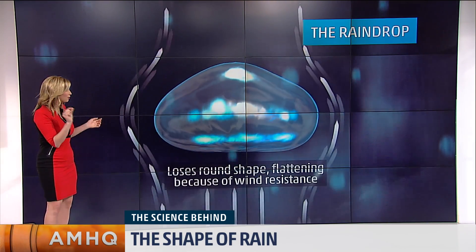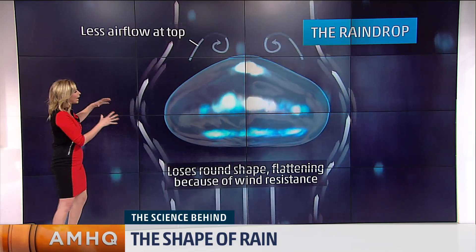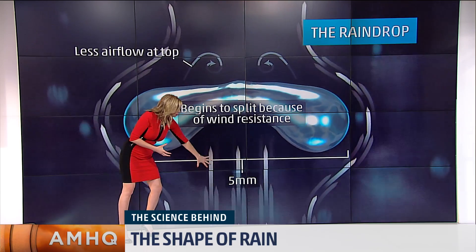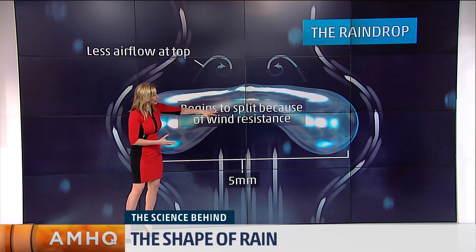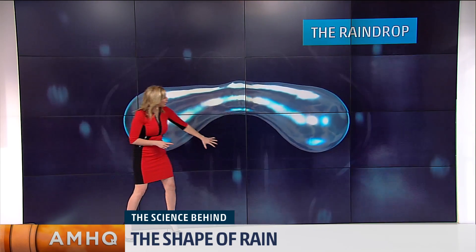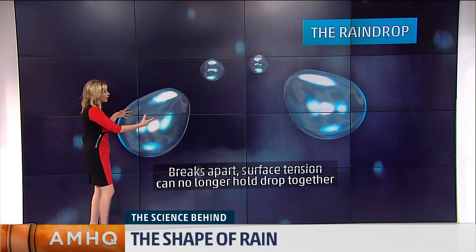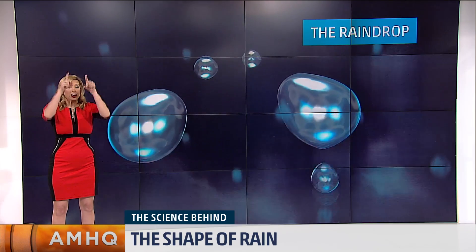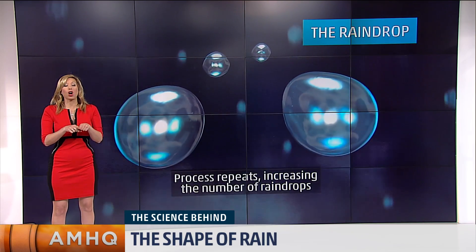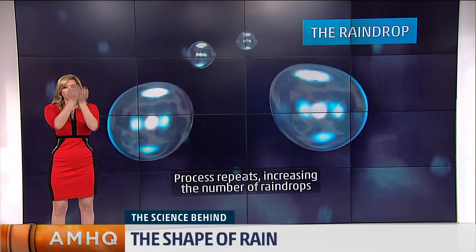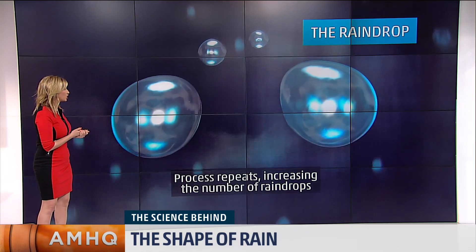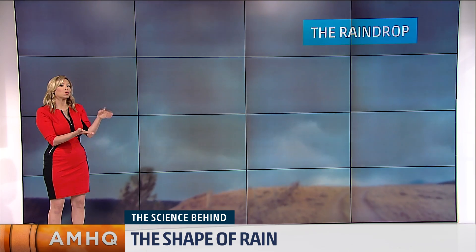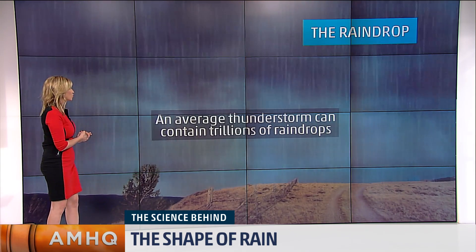Three millimeters is not very big, but as this sphere falls down, it encounters wind resistance pushing up on it. The drop flattens out, and the wind can even tear it apart before the pieces come back together. It would be impossible for them to look like we draw them, because wind resistance pushes up on the bottom. In reality, they look more like a hamburger bun — flat on the bottom and round on top — not a teardrop shape.